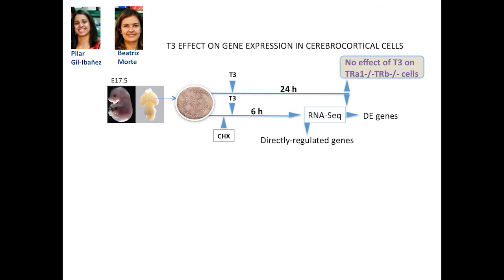So we recently turned to a simpler system: primary cerebral cortical cells in primary culture. These experiments were done by Pilar Iglesias and Beatriz Morte. They started from mouse embryos at E17.5, isolated the cerebral cortex, put it in culture dishes, and established the primary cultures. After a period of thyroid hormone deprivation, they added T3 and waited 24 hours.